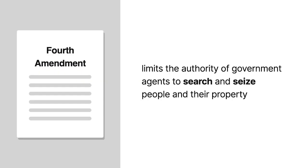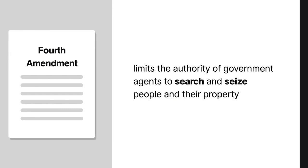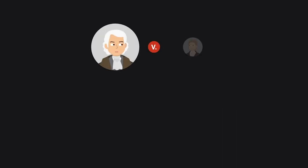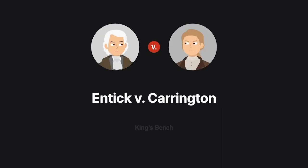The Fourth Amendment limits the authority of government agents to search and seize people and their property. As we learn in Entick v. Carrington, the roots of the amendment reach back to English common law.